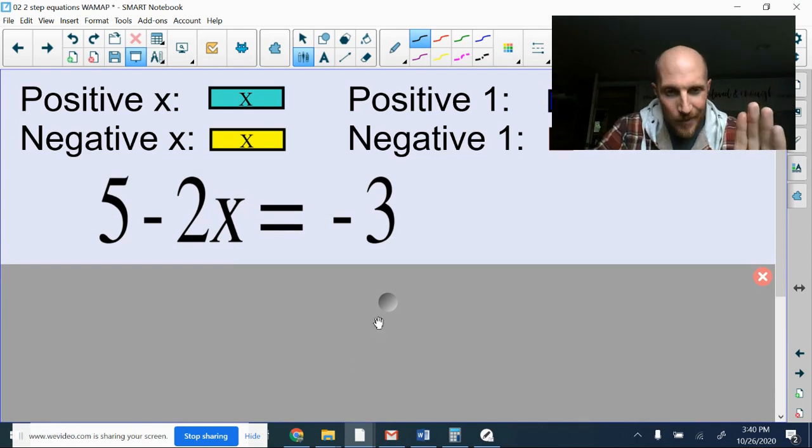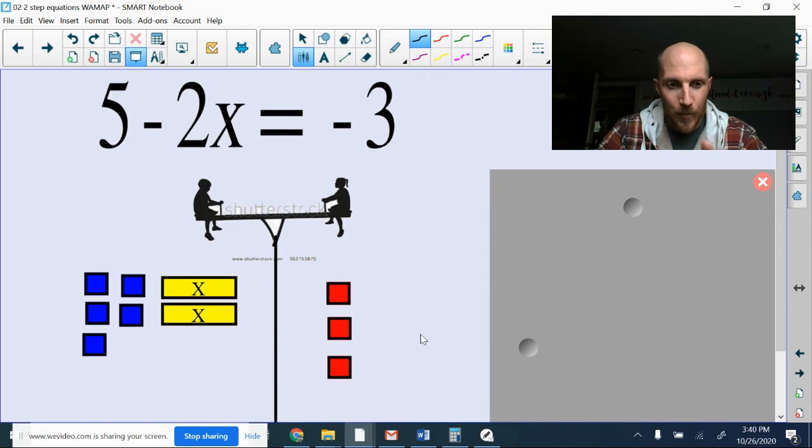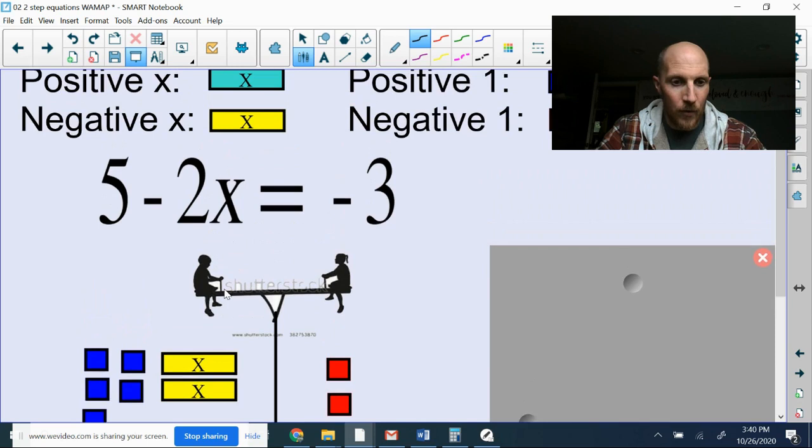So we've got 5 minus 2x equals negative 3, right? I'm not going to actually do the whole problem by using algebra tiles, but I think especially for the first step, this is very helpful. So 5. So I got the positive 5 blocks in dark blue minus 2x. Okay, so I got the yellows. Those are negative. Here's our key up here.